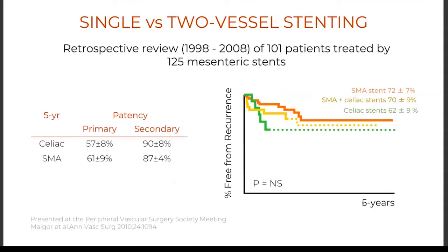We looked at whether single versus double stenting helped, and found absolutely no difference between doing only an SMA stent versus SMA and celiac stent. There is really no good support in the literature for routine multiple vessel stenting. I would recommend doing that only in patients with severe gastric ischemia in addition to bowel ischemia, with very poor gastroduodenal collaterals — for example, if endoscopy shows many ulcers with high-grade stenosis or occlusion of the celiac.